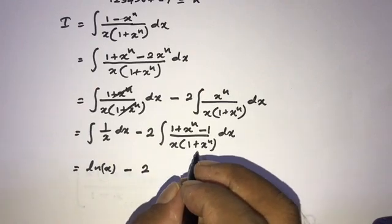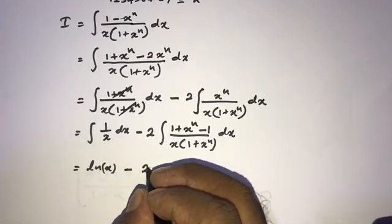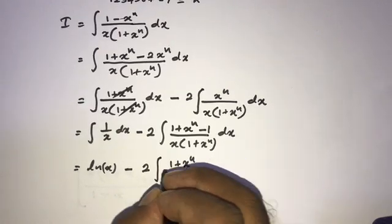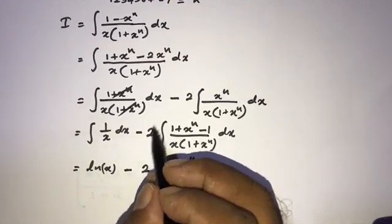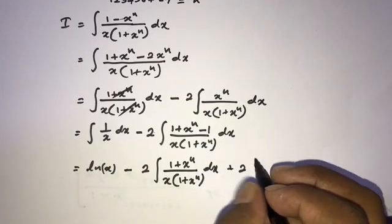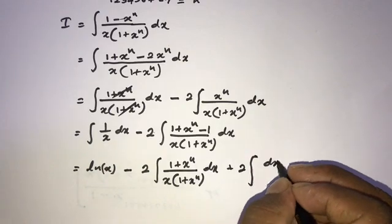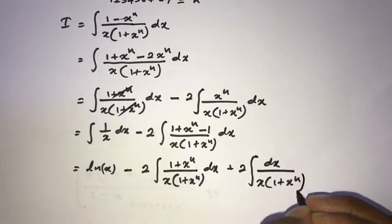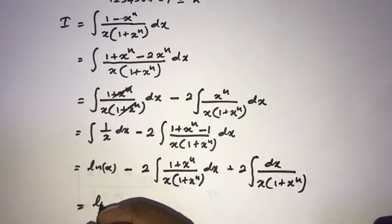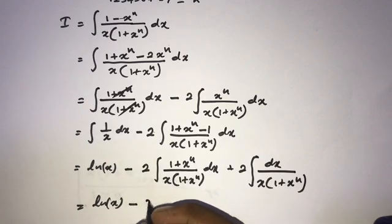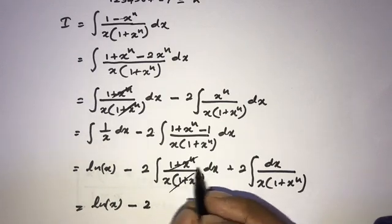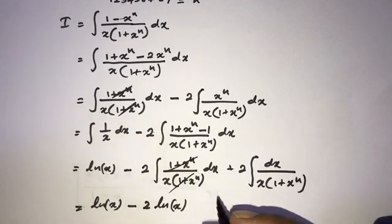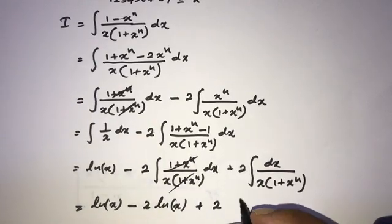For the second part, we again split into two integrals: minus 2 times the integral of (1 plus x^n) over x times (1 plus x^n) dx, plus 2 times the integral of dx over x times (1 plus x^n). The first piece simplifies to natural log of x, so we get natural log of x minus 2 times natural log of x, plus 2 times the remaining integral.